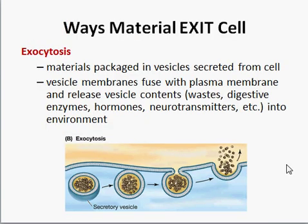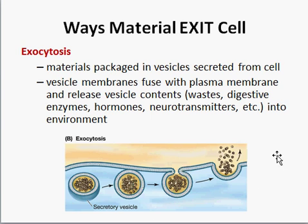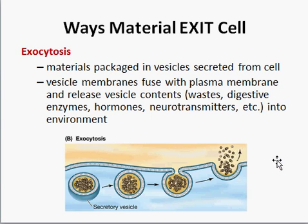Lastly, we're talking about bringing stuff in, but sometimes we need to get rid of stuff or have things leave the cell. This is called exocytosis — exo for exiting, cytosis meaning the cell. Substances are packaged in vesicles, these vesicles fuse with the plasma membrane, and the contents are released. This is similar to what we saw with the endomembrane system. Things released this way could be waste materials, enzymes, neurotransmitters, or other signal molecules. That's a quick review of Chapter 6, the plasma membrane.